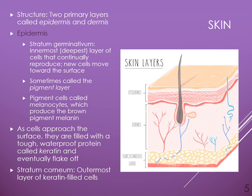The skin is composed of two primary layers: the epidermis, which is the outermost layer, and the dermis, which is deep to the epidermis, lying underneath it. The epidermis has a few different layers, and the innermost one is called the stratum germinativum.